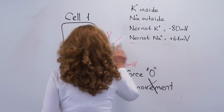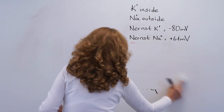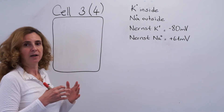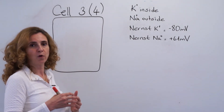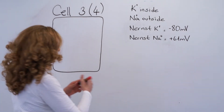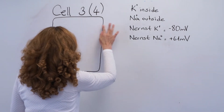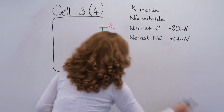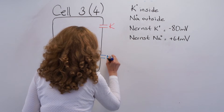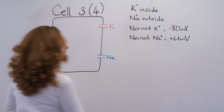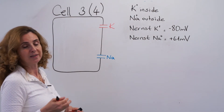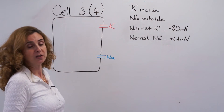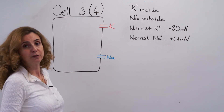The second example is cells three and four. In cell three, we have channels for both potassium and sodium, so condition number one — the presence of ion channels — is provided. Let us concentrate on condition number two, which is the driving force. The driving force, as we have already understood, is the sum of the electrical and chemical forces.